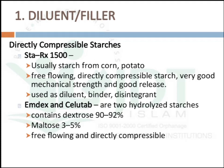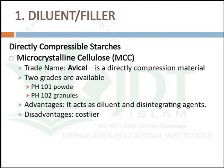Other directly compressible starches include Emdex and Cellutab, which are hydrolyzed starches containing 90 to 92% dextrose and 3 to 5% maltose. They are free-flowing and directly compressible. Microcrystalline cellulose, available mainly under the brand name Avicel, is another directly compressible material available in two grades: pH 101 as powder and pH 102 as granules. It is a good diluent and disintegrant but is relatively more costly.